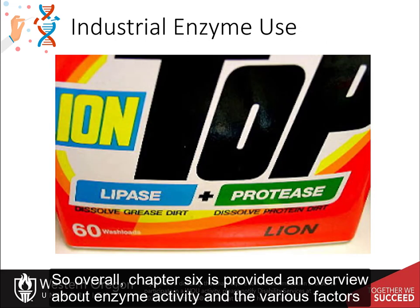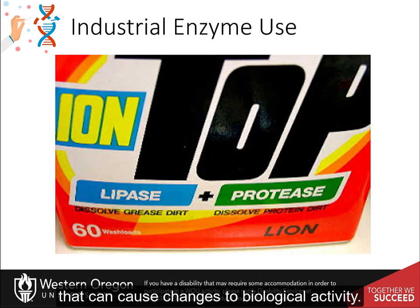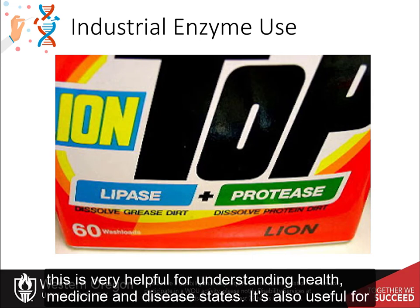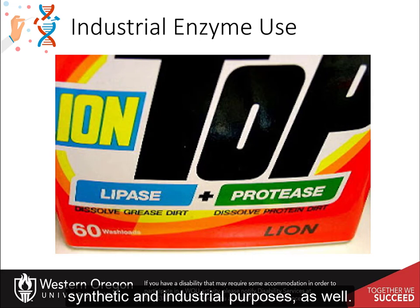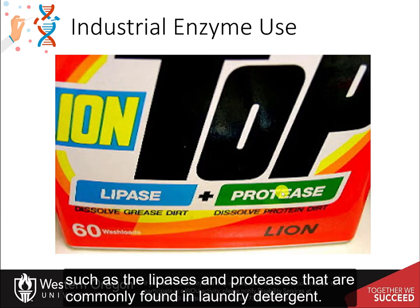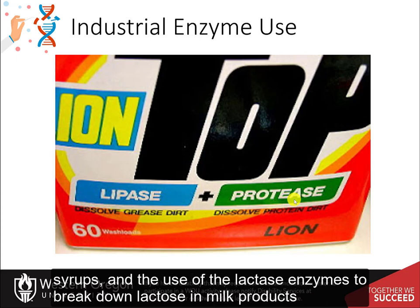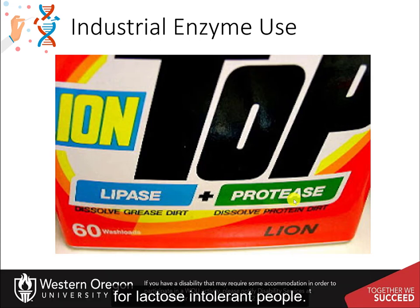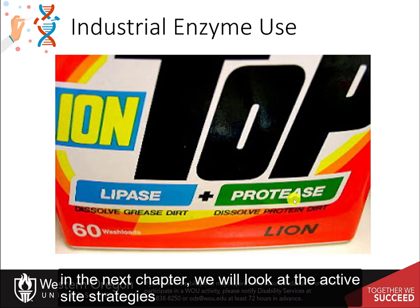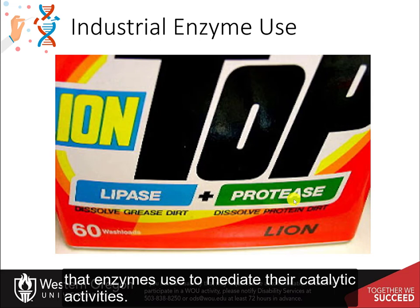Overall, Chapter 6 has provided an overview of enzyme activity and the various factors that can cause changes to biological activity. This is very helpful for understanding health, medicine, and disease states. It is also useful for synthetic and industrial purposes, such as lipases and proteases found in laundry detergent, glucose isomerase used to make high-fructose syrups, and lactase enzymes used to break down lactose in milk products for lactose-intolerant people. In the next chapter, we will look at the active site strategies that enzymes use to mediate their catalytic activities.